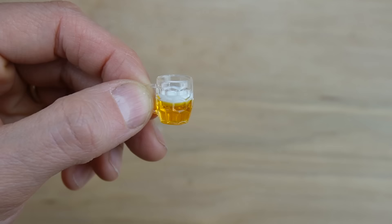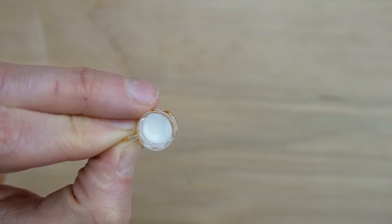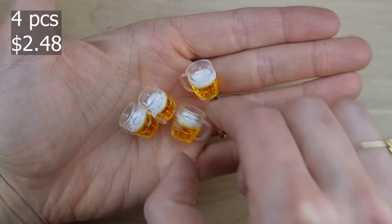Some more miniatures for the miniature pub. This is probably in scale for 1-12 it's about six inches tall equivalent. I've got a little bit of beer foam on the top and it came with four so that is a great deal. Plastic but it looks like glass.